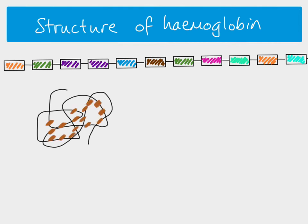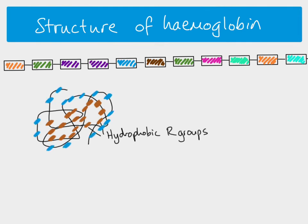The causes of this shape are to do with the amino acids and the R groups present. In haemoglobin, because it's globular, one of the reasons for that is that you've got lots of amino acids with hydrophobic R groups, and they form on the inside — remember this is a 3D shape. The brown amino acids here represent amino acids with hydrophobic R groups. Then amino acids with hydrophilic R groups end up on the outside of the molecule. Because of that, our globular proteins are usually water-soluble because we have these amino acids with hydrophilic R groups on the outside.